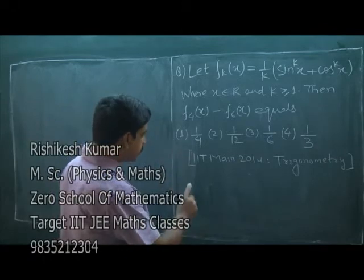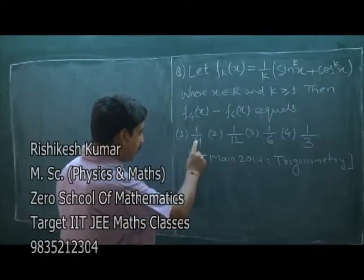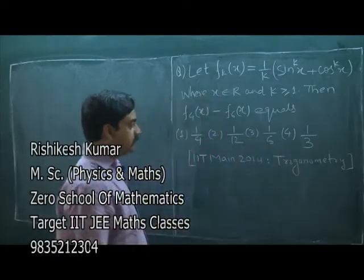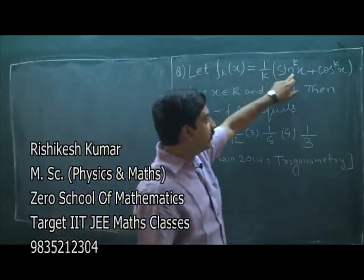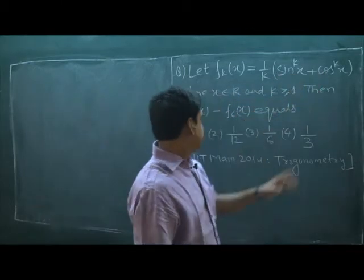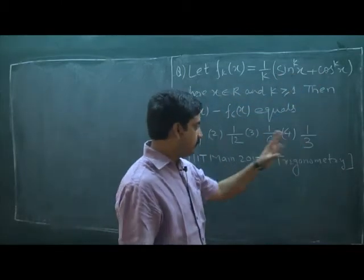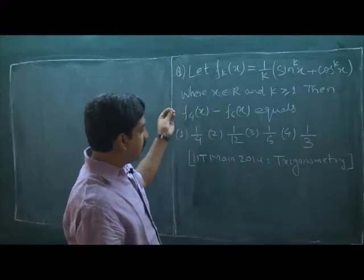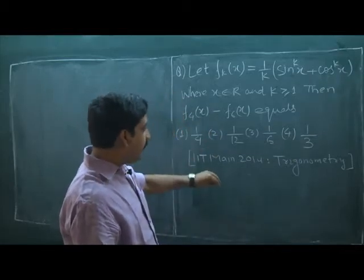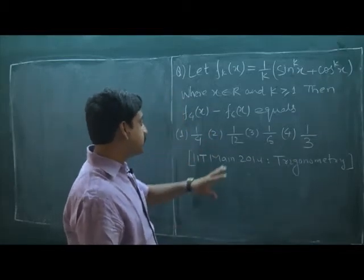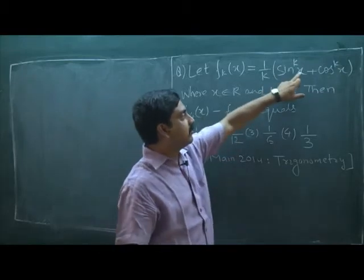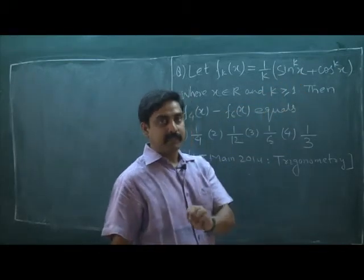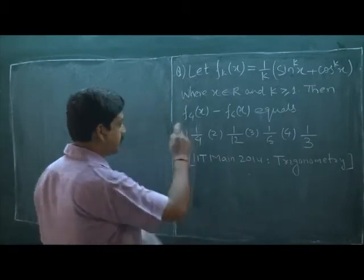You will find in this question that all the options are independent of x. Means, whatever be the value of x, the answer will be the same. So we can solve this question by putting any value of x, and for our purpose x equal to 0 will give the simplest method of answer.